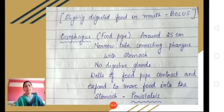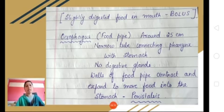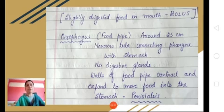The slightly digested food, termed as bolus, is swallowed and pushed into the food pipe through the pharynx. The food pipe, also called the esophagus, is around 20 to 25 centimeters in length. It is a narrow tube that connects the pharynx at the end of the mouth to the stomach. There are no digestive glands inside the food pipe, so salivary amylase continues its action there. The walls of the esophagus can contract and expand, pushing the food into the stomach. This contraction and expansion is called peristalsis or peristaltic movement.